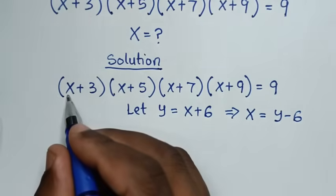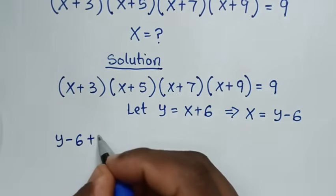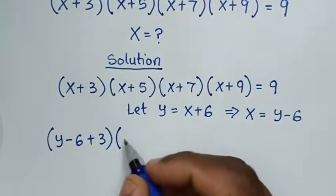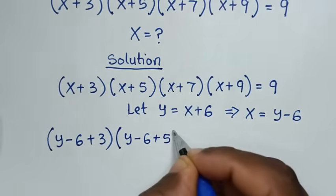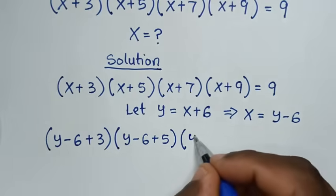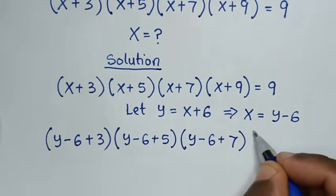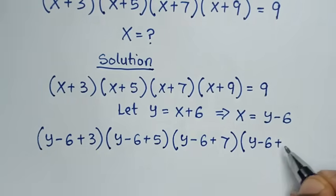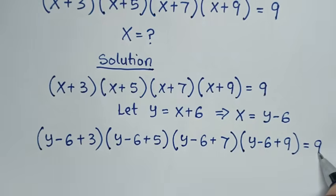Our equation becomes: (y−6+3)(y−6+5)(y−6+7)(y−6+9) = 9.